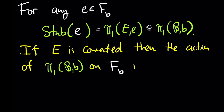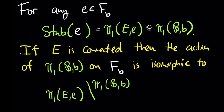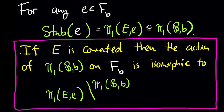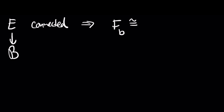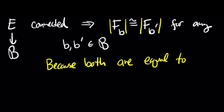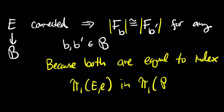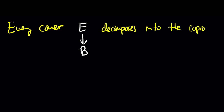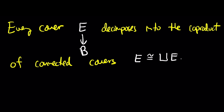If the space E is connected, the action of the fundamental group on the fiber is transitive, and it is isomorphic to the action of the fundamental group on the cosets of the fundamental group of the total space viewed as a subgroup of the fundamental group of the base space. A nice consequence is that if your covering space is connected, the fiber over b is isomorphic to the fiber over b prime for any b and b prime in the base space — both have cardinality equal to the index of the fundamental group of the covering space inside the fundamental group of the base space. Also, every cover E over B decomposes as a coproduct of connected covers over B.